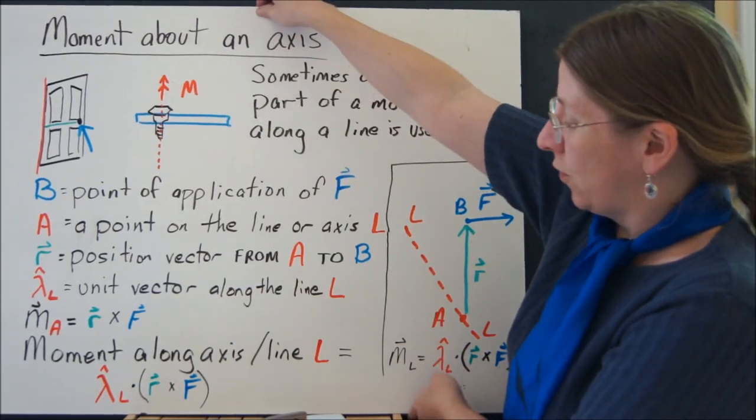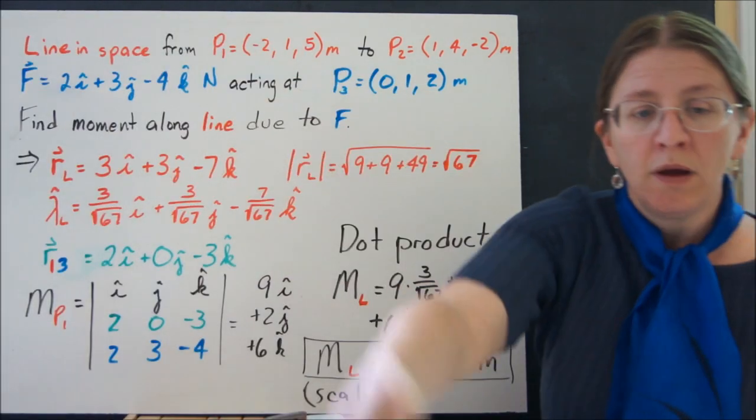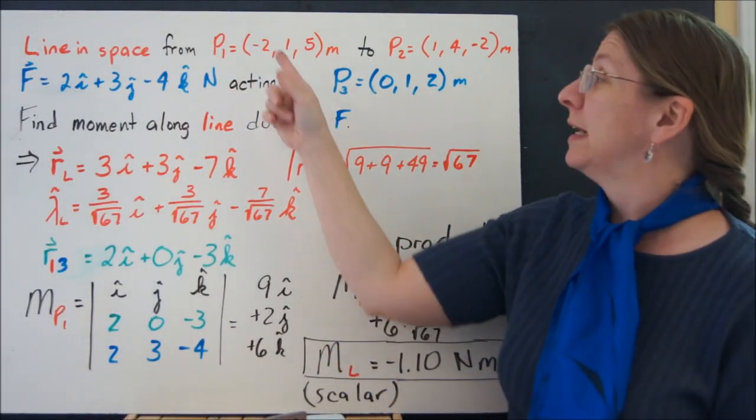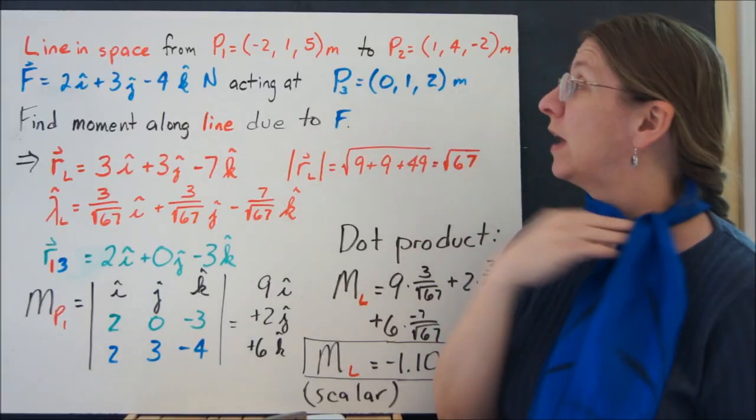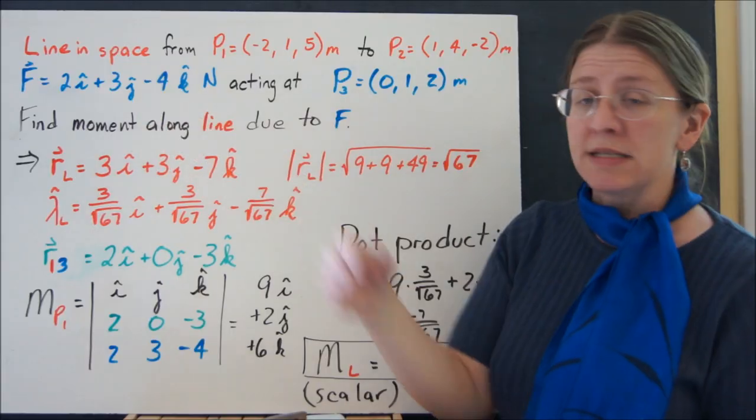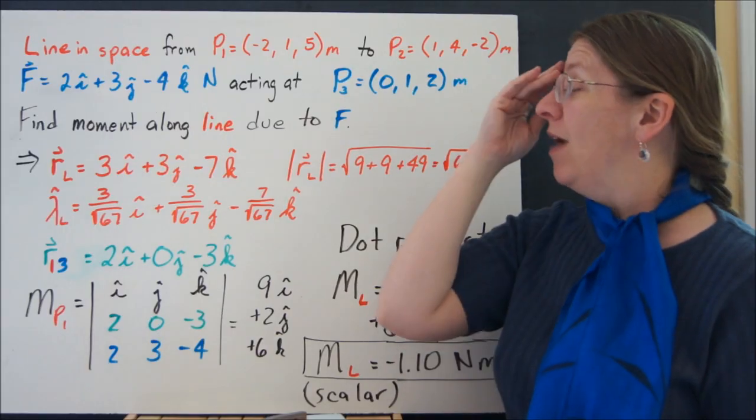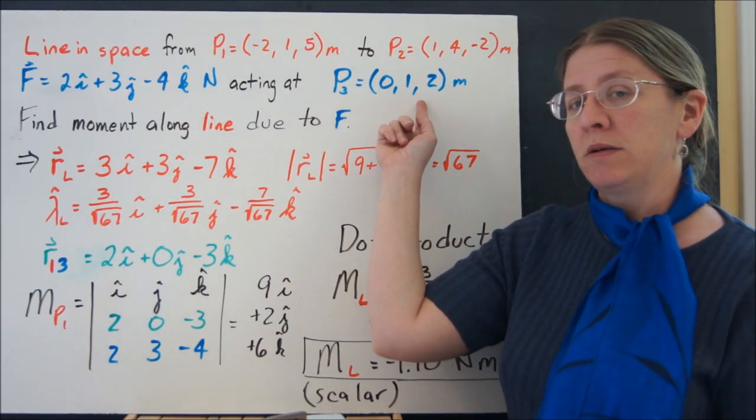I have one example for you. Let my line in space be along the line connecting P1 and P2. I've got some force, 2i plus 3j minus 4k—I made it up. That force acts at this point in 3-space.